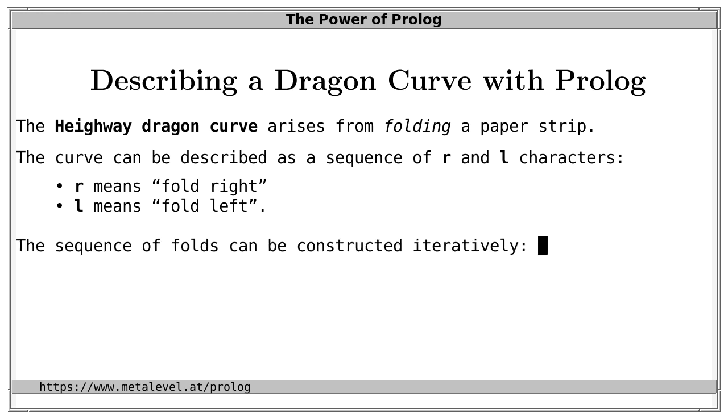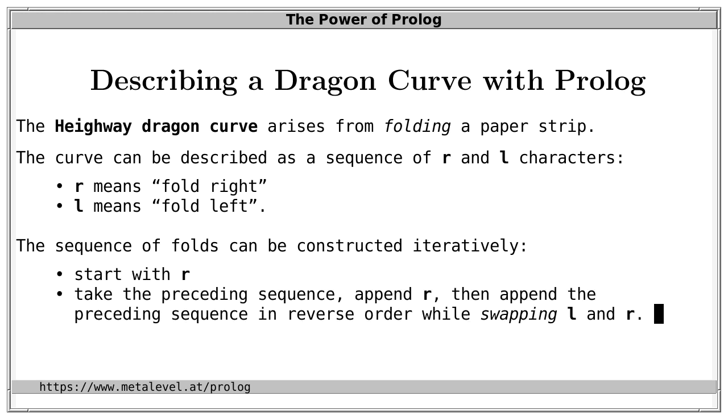R means fold right and L means of course fold left. And the sequence describing the Heighway dragon curve can be constructed iteratively. First we start with R, a right fold. And for the next iteration, that is to get the next sequence, we take the preceding sequence, whatever it was, append R and then append the preceding sequence again, but this time in reverse order. And we also swap L and R.